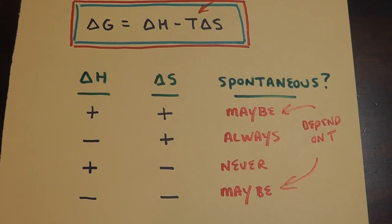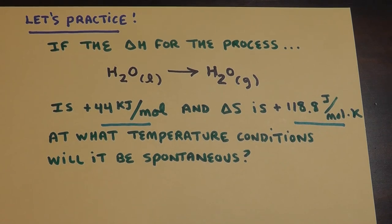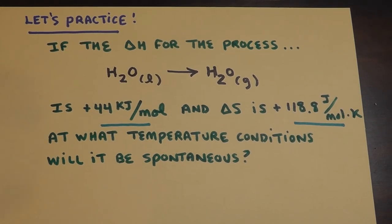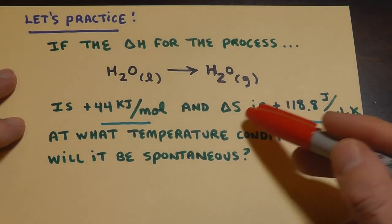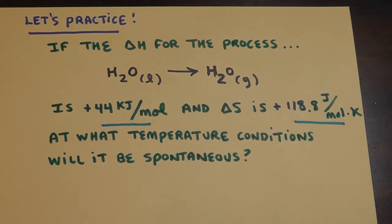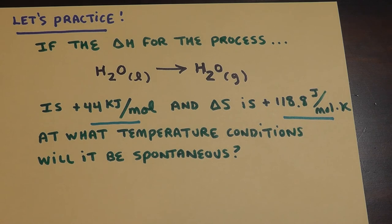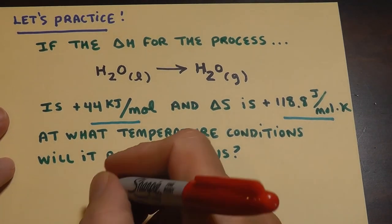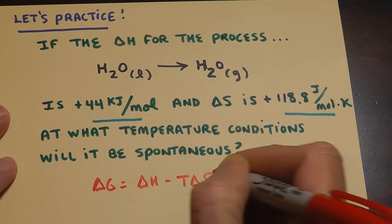Now let's do some practice. More practice. That's the more practice alarm. Here's something. I told you we were going to talk more about this later. If the delta H for the process, which by the way is the vaporization of water, liquid to gas, if that's positive 44 kilojoules per mole, and delta S is positive 118 joules per mole per kelvin, both of them positive, that's one of those things - it's a maybe. At what temperature conditions will it be spontaneous? I'm going to take our killer equation here. Delta G equals delta H minus T delta S.